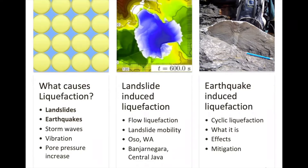We also learned that flow liquefaction can only be triggered if the steady-state shear strength of the soil is exceeded by the triggering stress. In this lecture I'm going to introduce a different type of liquefaction called cyclic liquefaction, and I'm going to talk about what it is, the ways that we can see it at the surface, the effects it has, and ways that people are trying to mitigate the hazard today.